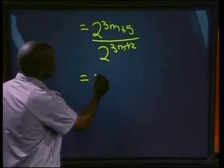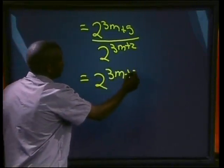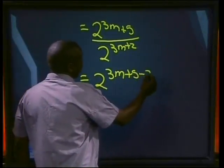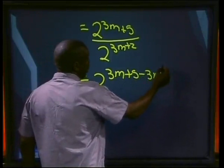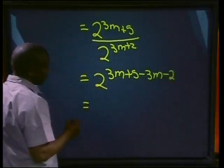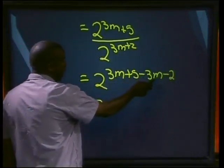We'll have 2 to the power 3m plus 5. What do we take away? We take away 3m and we take away the 2. That will give us 2 to the power of 3m. Take away 3m.